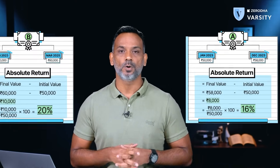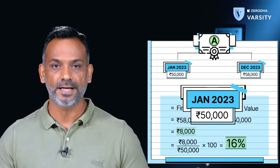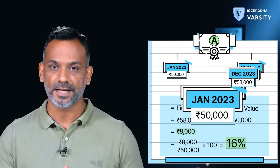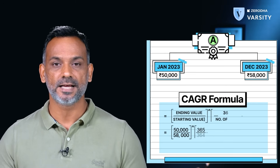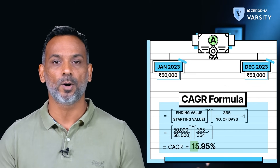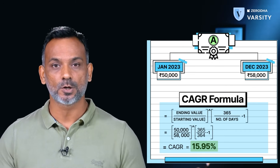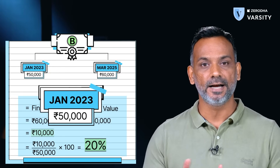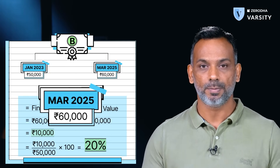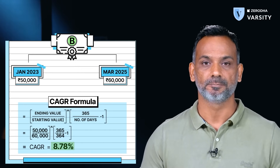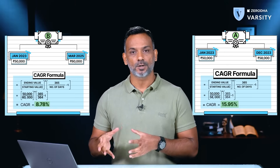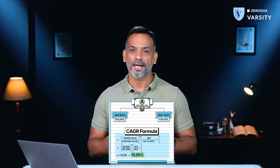Now let's go back to our initial question: which stock is better, Stock A or Stock B? The starting value of Stock A is 50,000 and the ending value is 58,000. If you plug in the CAGR formula, you get the CAGR value as 15.95%. For Stock B with a starting value of 50,000 and ending value of 60,000, the CAGR comes out as 8.78%. So you can now compare both stocks, and clearly Stock A is the winner.